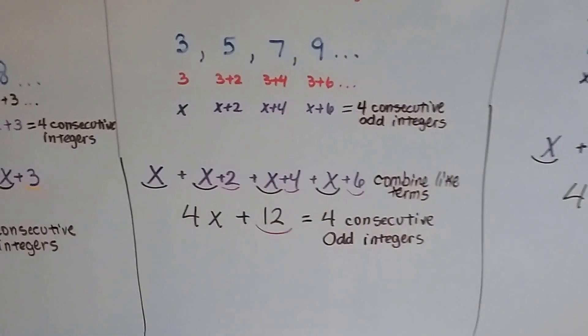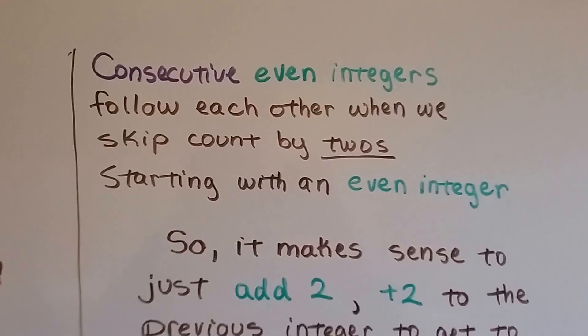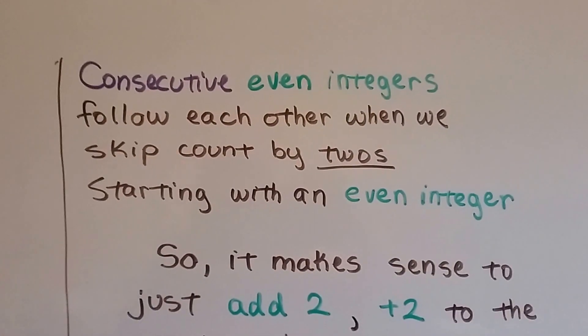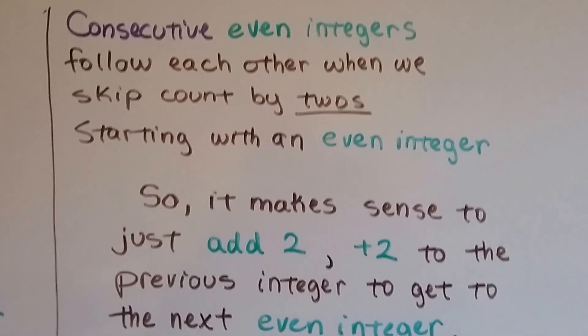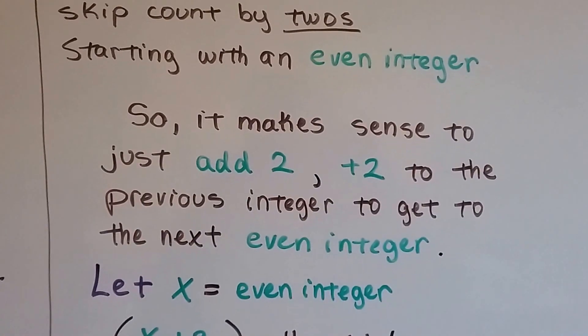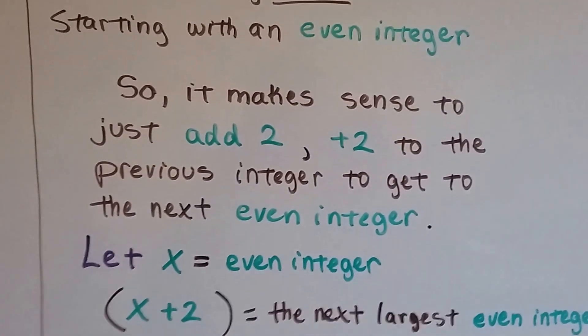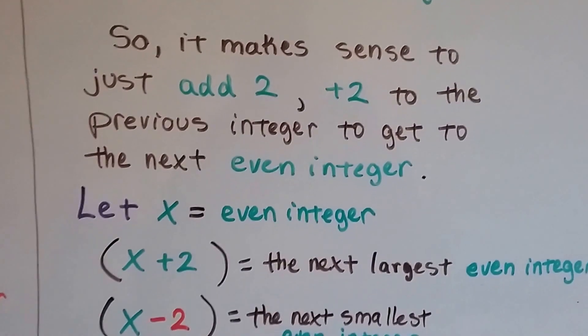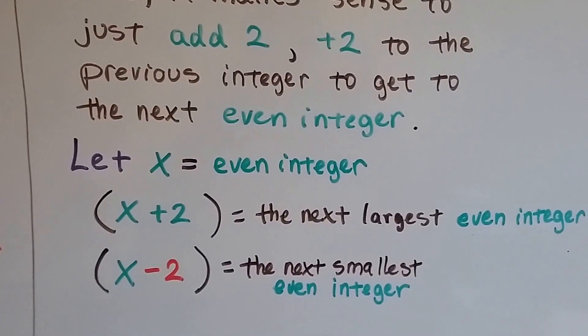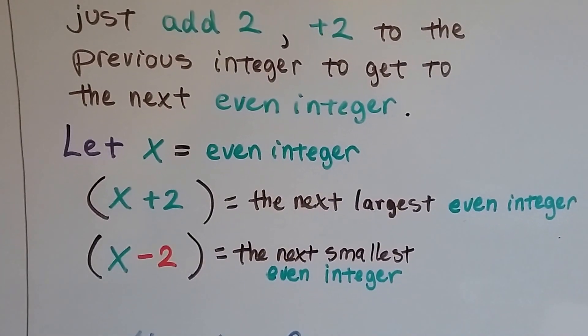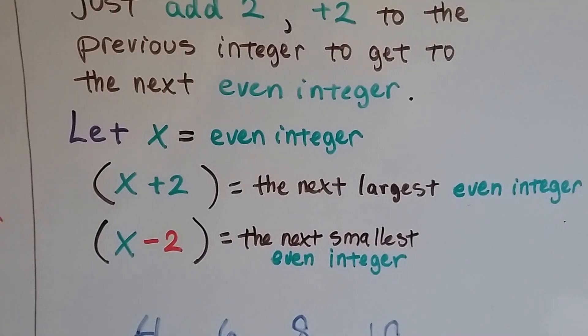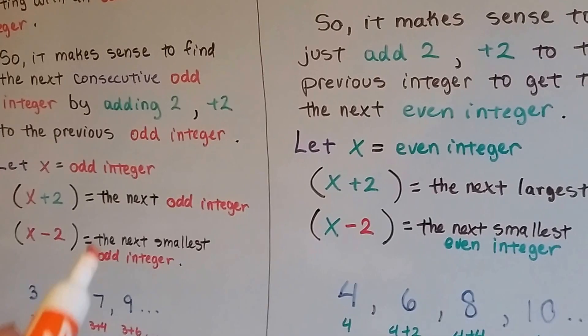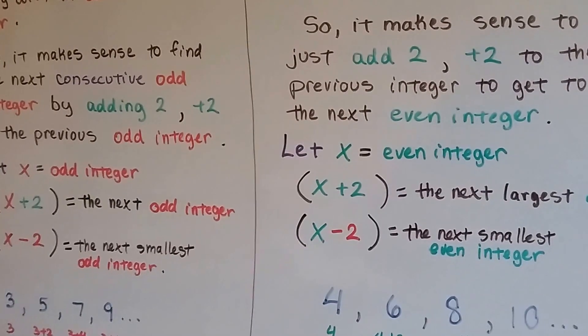And you know what? It's the same equation for even, because consecutive even integers follow each other when we skip count by 2's also, starting with an even integer. So it makes sense to just add 2 to the previous integer to get the next even one. So if we let x equal an even integer, x plus 2 is the next largest even integer, and x minus 2 is the next smallest even integer.